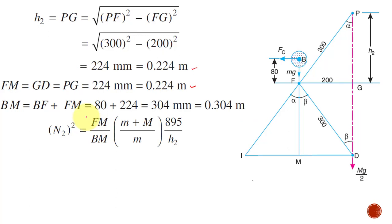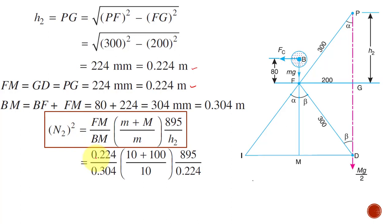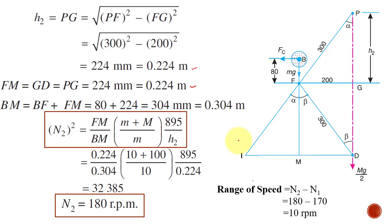Now let us find the maximum speed. N2² = (Fm / Pm) × ((m + M) / m) × (895 / H2). Substituting all values gives N2 = 180 RPM. The range of speed of the governor is the difference between maximum and minimum speed: N2 − N1 = 180 − 170 = 10 RPM.